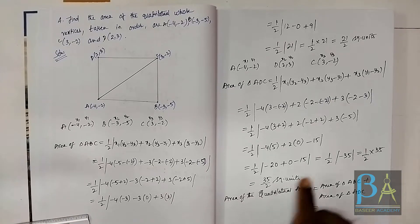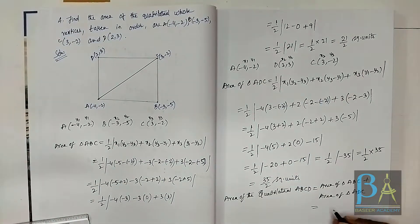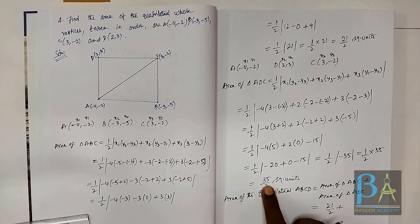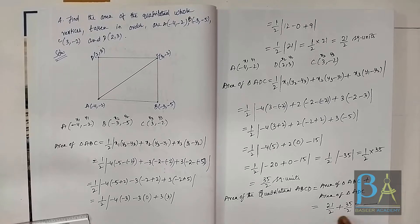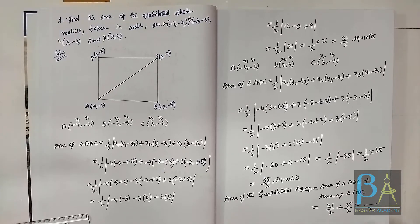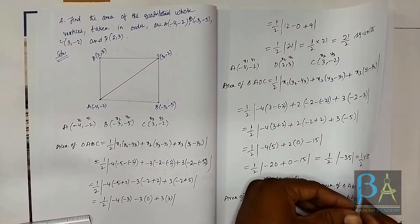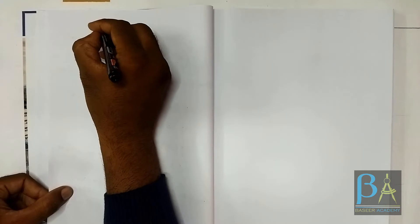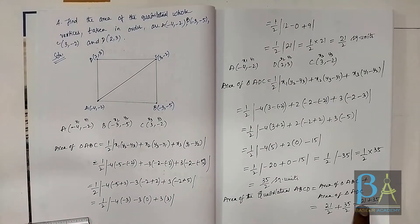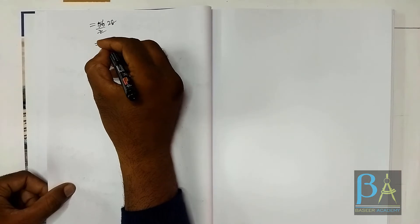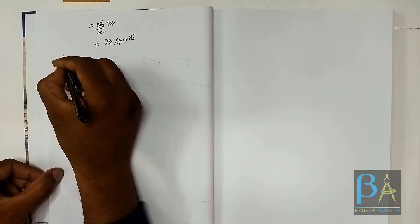Area of quadrilateral ABCD = area of triangle ABC + area of triangle ADC = 21/2 + 35/2 = 56/2 = 28 square units.